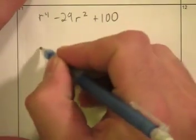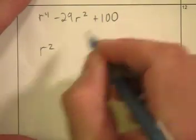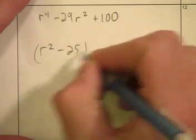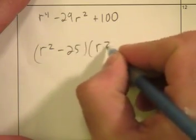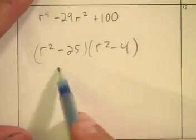We've got one more: r squared minus 25, which factors as r squared minus 4. Notice these are both perfect square factors.